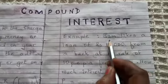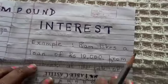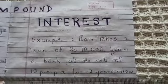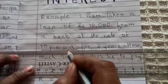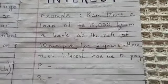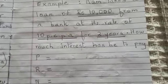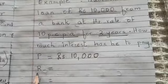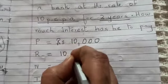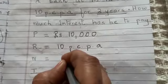The example reads: Ram takes a loan of rupees 10,000 from a bank at the rate of 10 percent per annum. P.C.P.A. means percent per annum, for two years. How much interest has he to pay? Now let's write the data down. P is the principal, which is rupees 10,000. R is the rate of interest, which is 10 p.c.p.a. N is the period, which is two years.